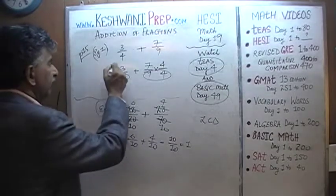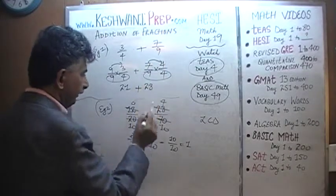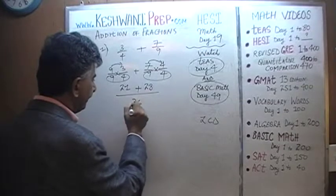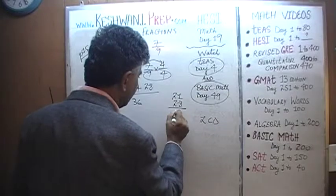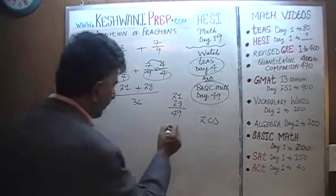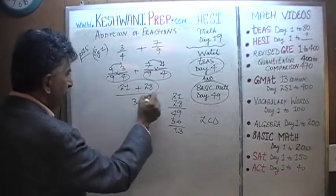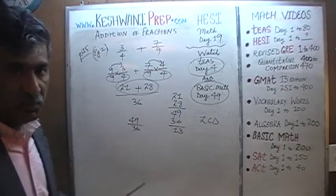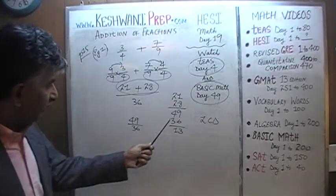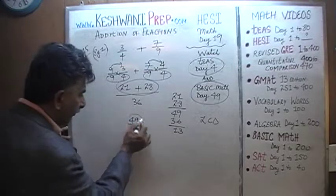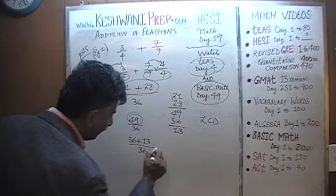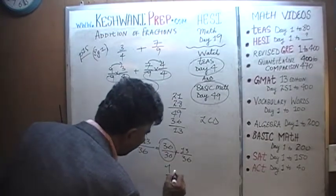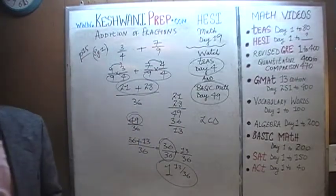We take care of the numerators: 9 times 3 is 27, plus 7 times 4 is 28. The common denominator is 9 times 4, which is 36. Adding the numerators: 27 plus 28 gives us 55. Since 55 is more than 36, this is an improper fraction — 55 over 36. We must convert it to a mixed number. 55 is simply 36 plus 19, so we can write it as 36 over 36 plus 19 over 36, which equals 1 and 19 over 36. The answer is 1 and 19/36.